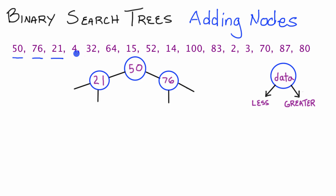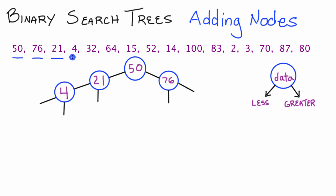Next we want to add the number 4. We start at 50, and 4 is less than 50, so we go down the left pointer. Then we compare 4 with 21 — 4 is less than 21, so we go to the left pointer and place 4 in a node there.